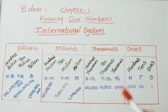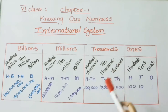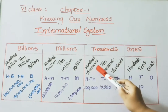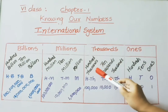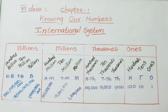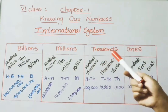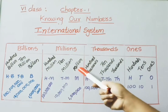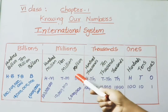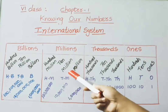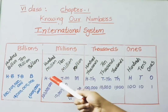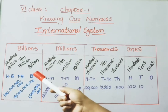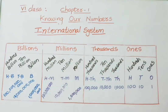Comparing the Indian and International systems: up to ten thousands they are the same. In Indian system we have lakhs, but in the International system we have hundred thousands. For ten lakhs we have millions — so one million equals ten lakhs, ten million equals one crore, hundred million equals ten crores, and one billion equals hundred crores.